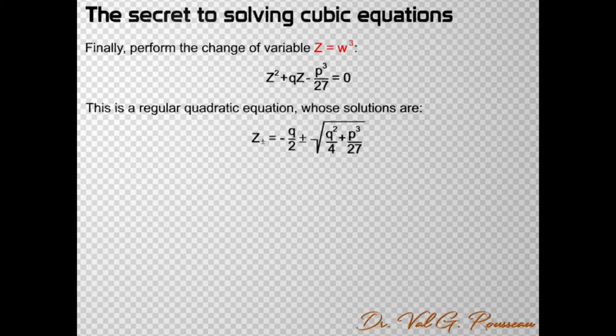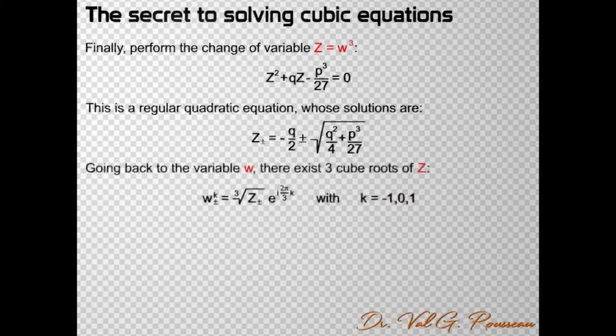First, we need to go back from z to w. The reflex is to take the cube root of z±, but since the equation z = w³ is a cubic equation for w, it must have three solutions. You can check that the cube root of z± multiplied by exponential i·2π/3·k, where k = -1, 0, or 1, is also a solution, since the cube of the exponential is equal to 1 for any value of k. But now we have six solutions since we have two possible signs and three possible values for k.